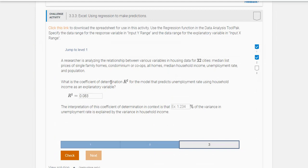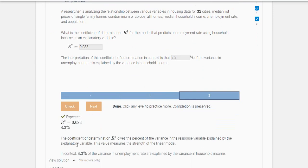The interpretation of the coefficient of determination in this context is that you change this to a percentage. 8.3% of the variance in unemployment rate is explained by the variance in household income. And we got it.